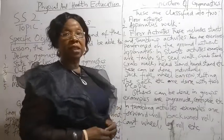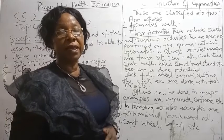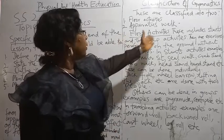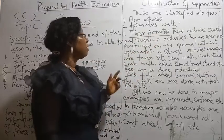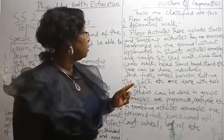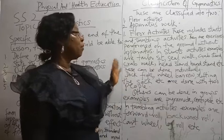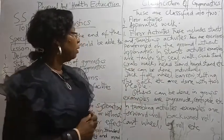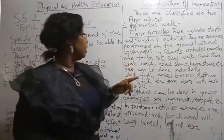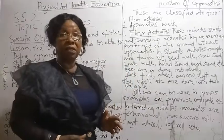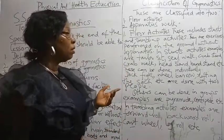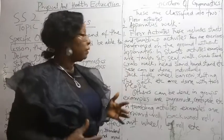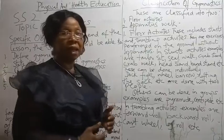Let's take them one after the other. Floor activities include stance and tumbling activities. These are exercises performed on the ground without apparatus. Stance activities examples are tailor seat, sail walk, crab stance, crab walk, head stance, hand stance, etc.